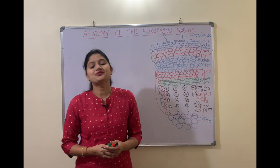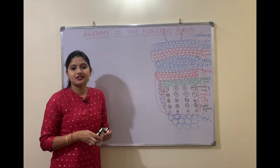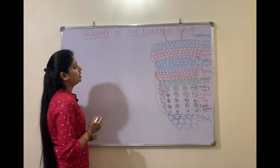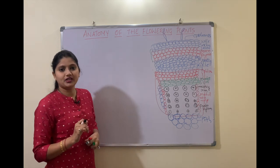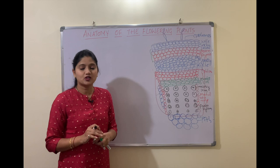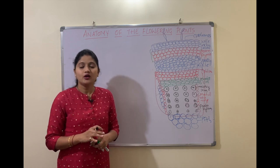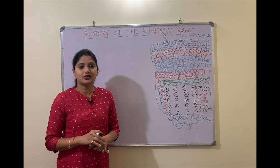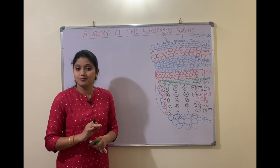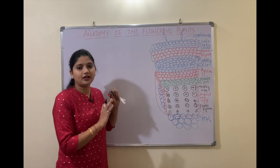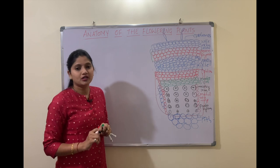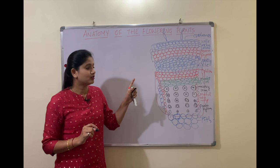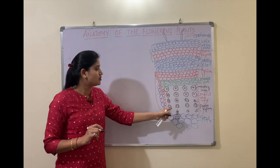Hello guys, in this video we will take up the next part of secondary growth in the dicot stem, that is the activity of the cork cambium. We have seen the activity of the vascular cambium in the previous video. So before watching this video, please go back to the previous video on the activity of the vascular cambium and then come to the activity of the cork cambium.